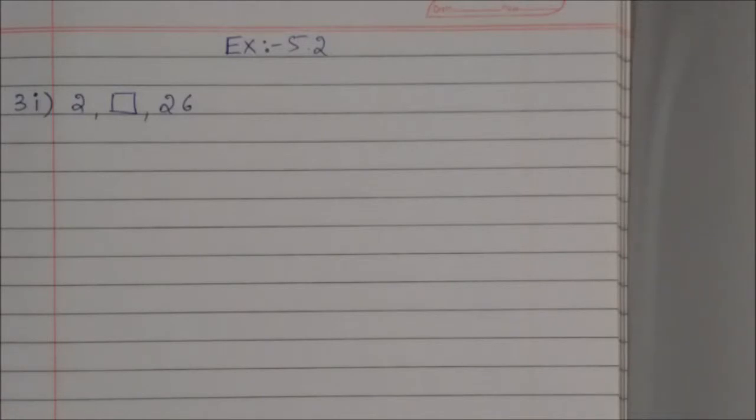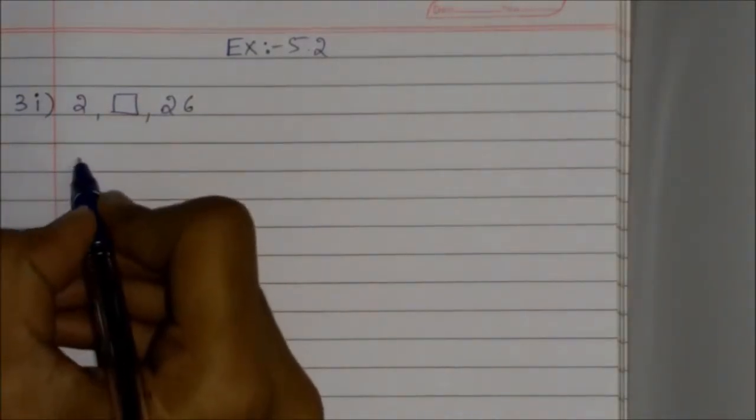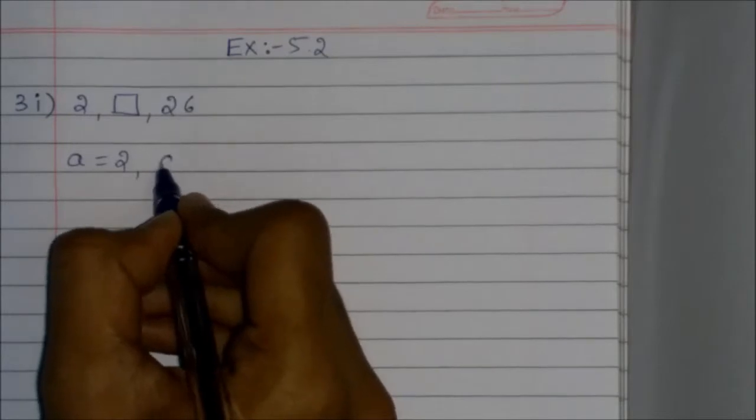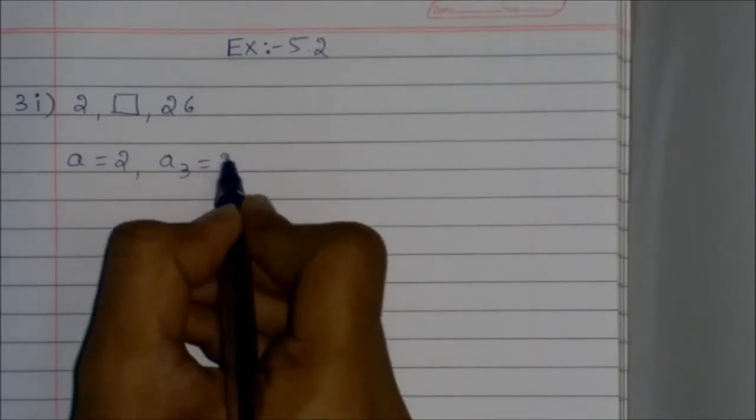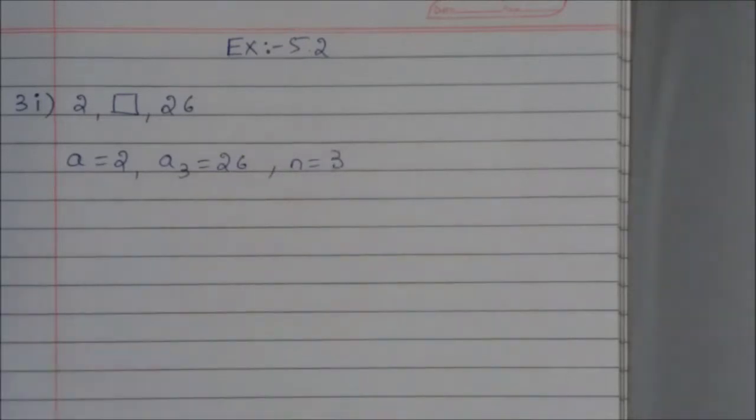Third question, first part. Here we have to find the missing term. From the given question we know that a₁ equals 2 and a₃ equals 26, and n equals 3.